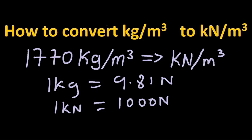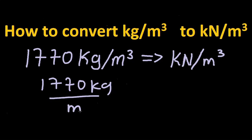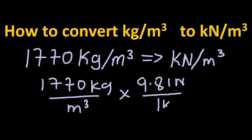With that said, let's do the conversion quickly. First, let's express it in this form: 1770 kg over cubic meters, putting the cubic meters as denominator. Now we're going to multiply it by 9.81 Newtons over 1 kg, because in every one kilogram we have 9.81 Newtons. Through this way we can cancel the kg unit so that we'll be left with Newtons per cubic meters.